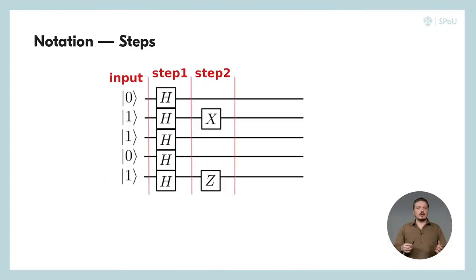Then, from left to right, we are going to place the operators, or quantum gates, which we are going to apply to the corresponding qubits. Each column here corresponds to a step in our algorithm, and the row where we write down the gate corresponds to the qubit to which this gate is applied. Here, for example, we have this algorithm. On the first step, we apply Hadamard gates to all five qubits. Then, on the second step, we apply x-gate to the qubit number 2, and z-gate to the qubit number 5.